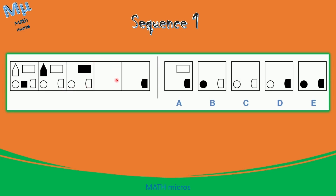So the rectangle should disappear in the fourth square, leaving only a circle and the rounded shape. The rectangle should not be there. Looking at the options, we can cross out option A since it has a rectangle. Also, there is only one black shape in each square of the sequence, but in option E you have two black shapes. So option E can also be ruled out. Options A and E are eliminated.